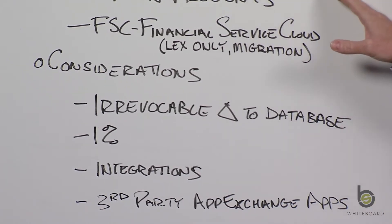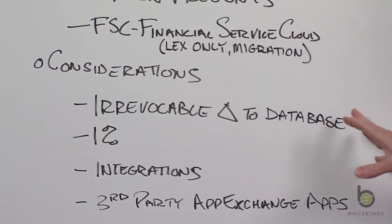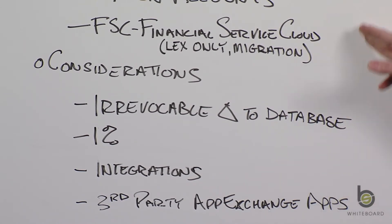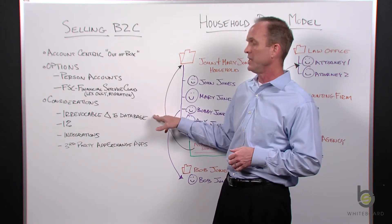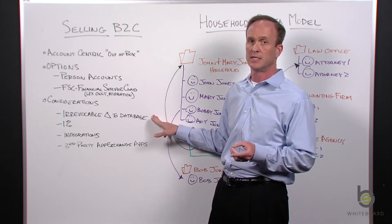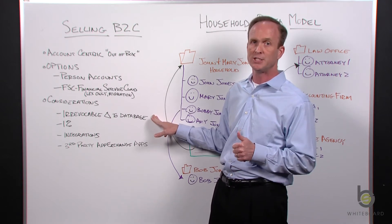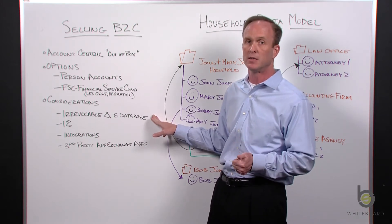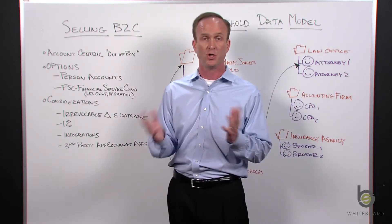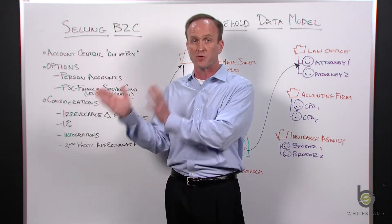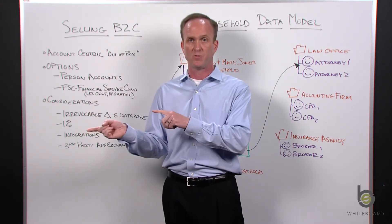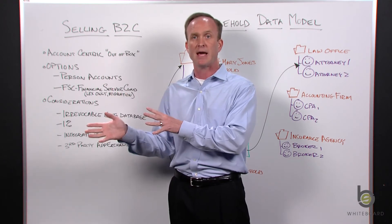So we've talked about a couple of options available from Salesforce — what considerations do we need to know? The first thing you need to know about either one of these options is that if you enable it and start using it, you cannot go back to standard accounts and contacts. It's an irrevocable change to the database and the data model underlying inside Salesforce. Once you turn it on, you would have to move to a fresh Salesforce database and migrate all your data and business processes to get back to accounts and contacts.